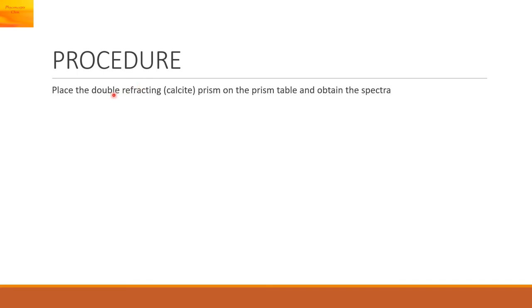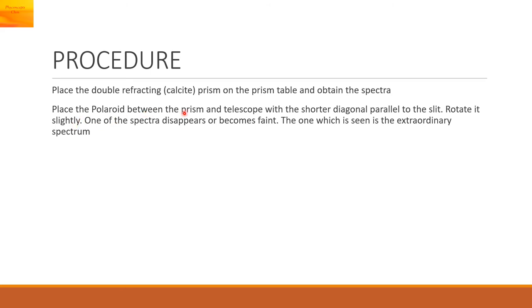Procedure: Here we start with the actual experiment of double refraction. Place the double refracting prism. Suppose it is made up of calcite. This prism is mounted on the prism table and we obtain the spectra. Place the polaroid between the prism and the telescope with a shorter diagonal parallel to the slit. Rotate it slightly. One of the spectra disappears or becomes faint. The one which is seen is the extraordinary spectrum.